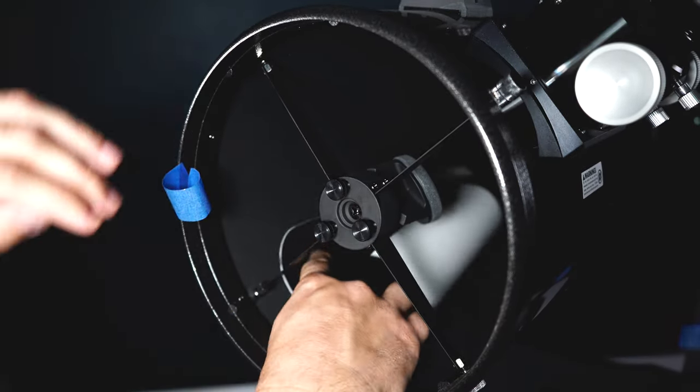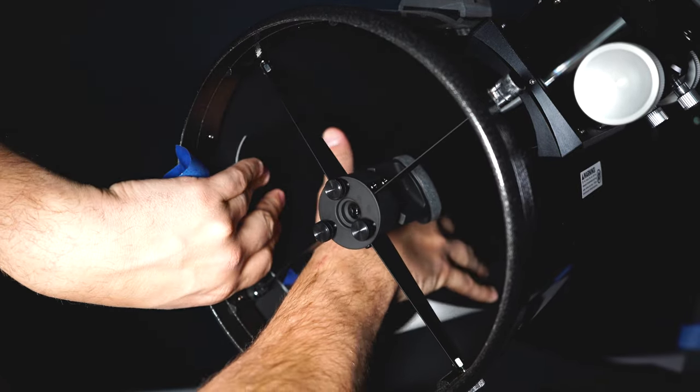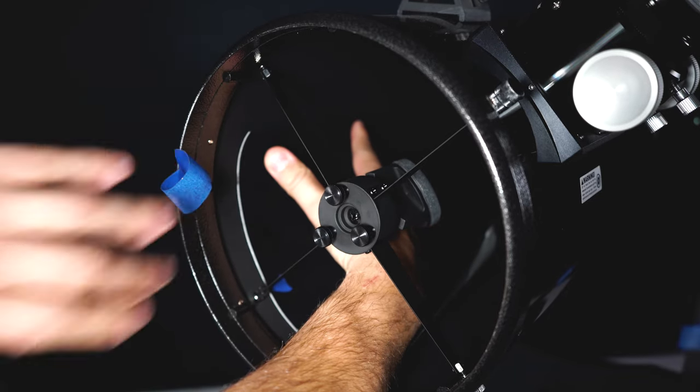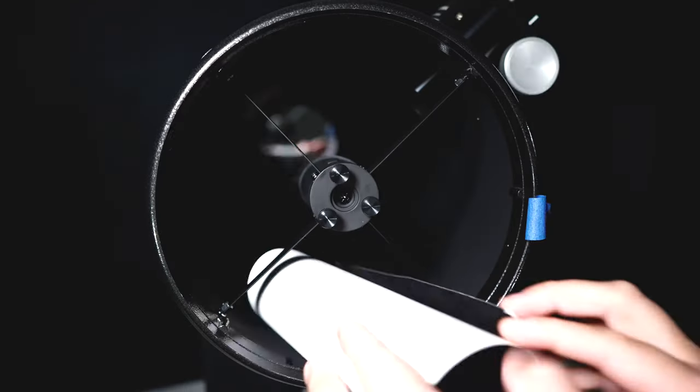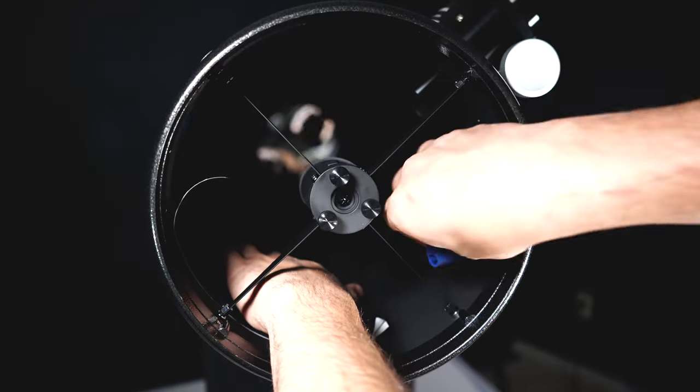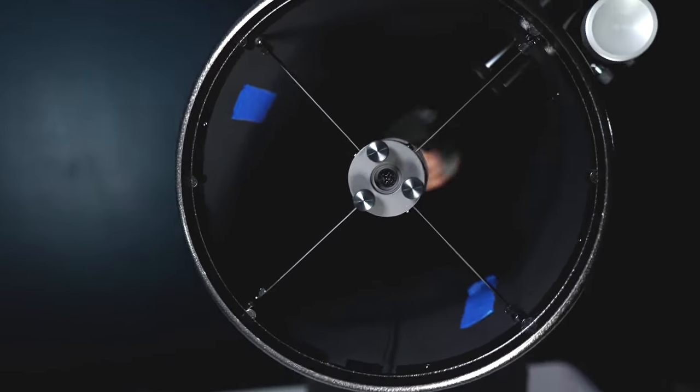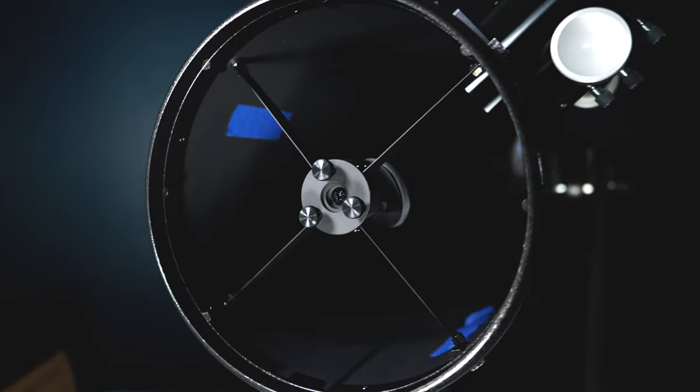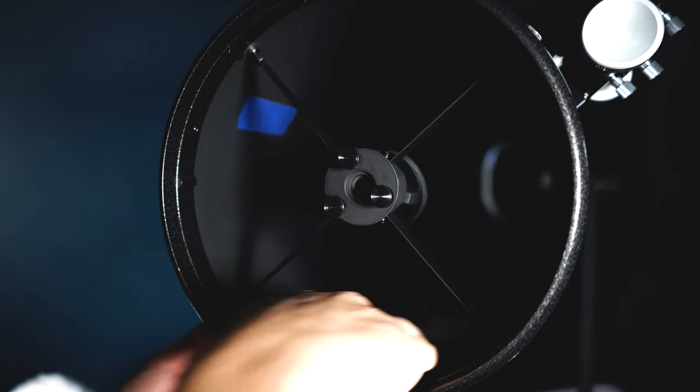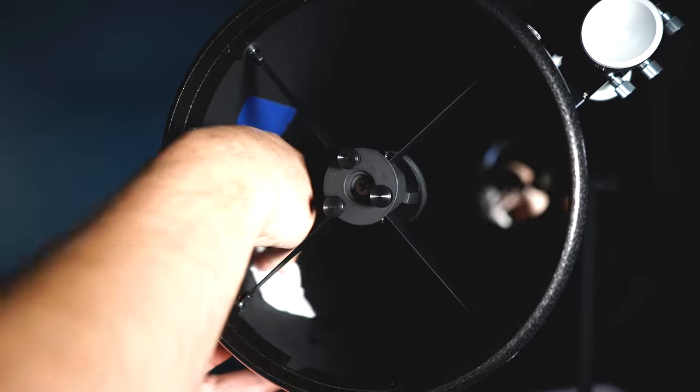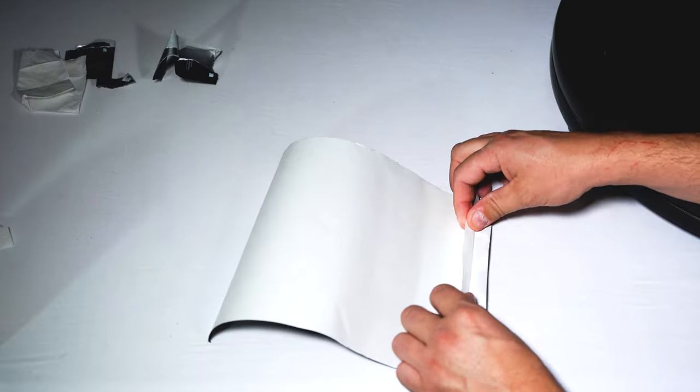Now that you've practiced rolling out your flocking paper, you want to add an additional piece of tape on either side of the flocking paper. This is just going to help with positioning. Now you want to take your cleaning wipe and clean the installation area. Now this is very important otherwise the flocking paper may not remain stuck to the inside of your OTA.